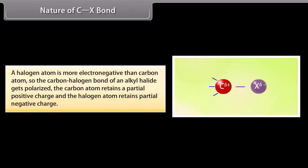Nature of CX Bond. A halogen atom is more electronegative than carbon atom, so the carbon-halogen bond of an alkyl halide gets polarized. The carbon atom retains a partial positive charge, and the halogen atom retains a partial negative charge.